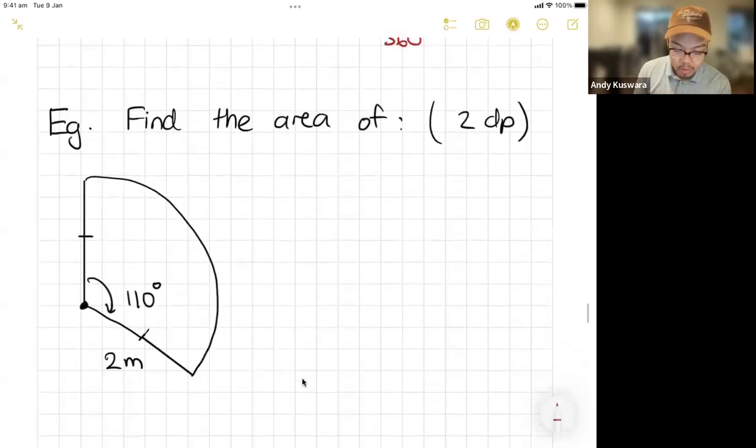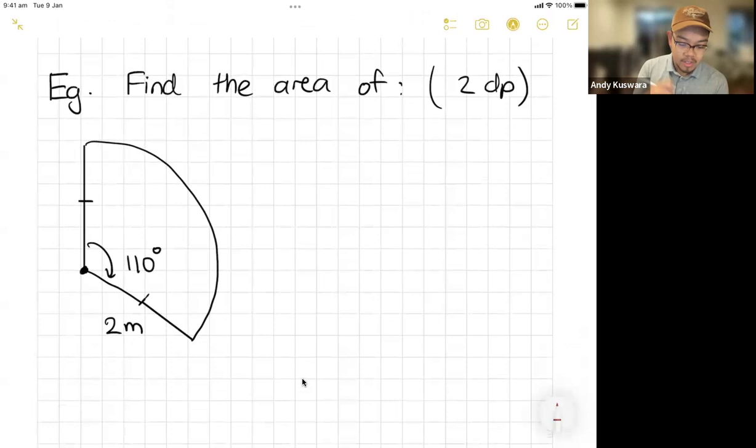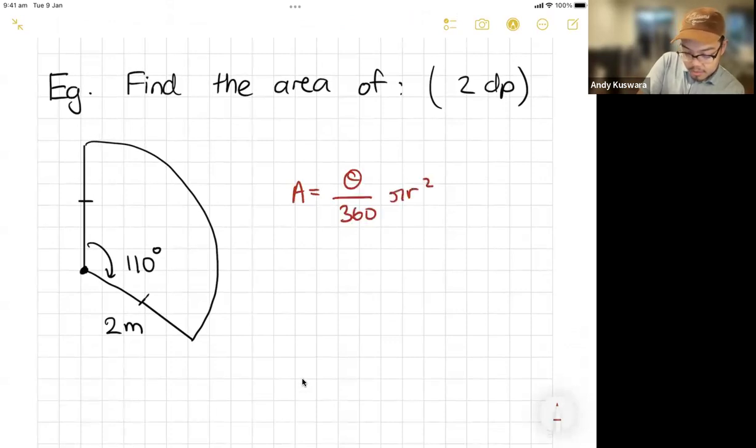And I'm pretty sure I've got one question here where it says, find the area of this circle here or this sector, I should say. So again, the formula, I'm using this one, theta on 360 pi r squared.